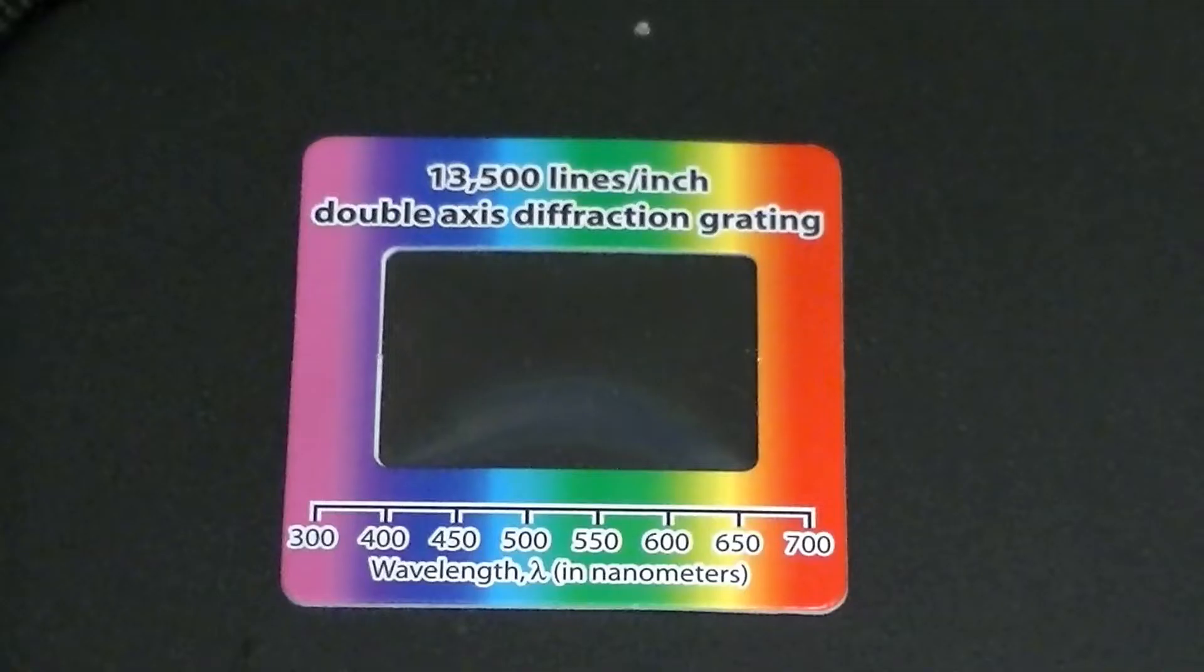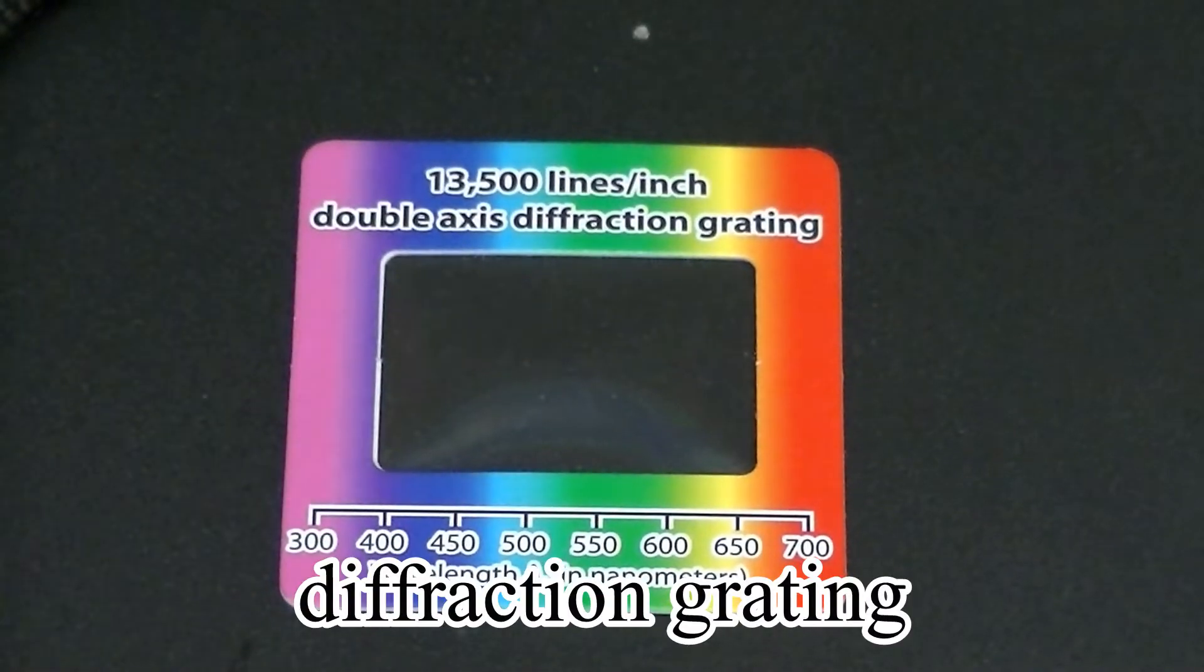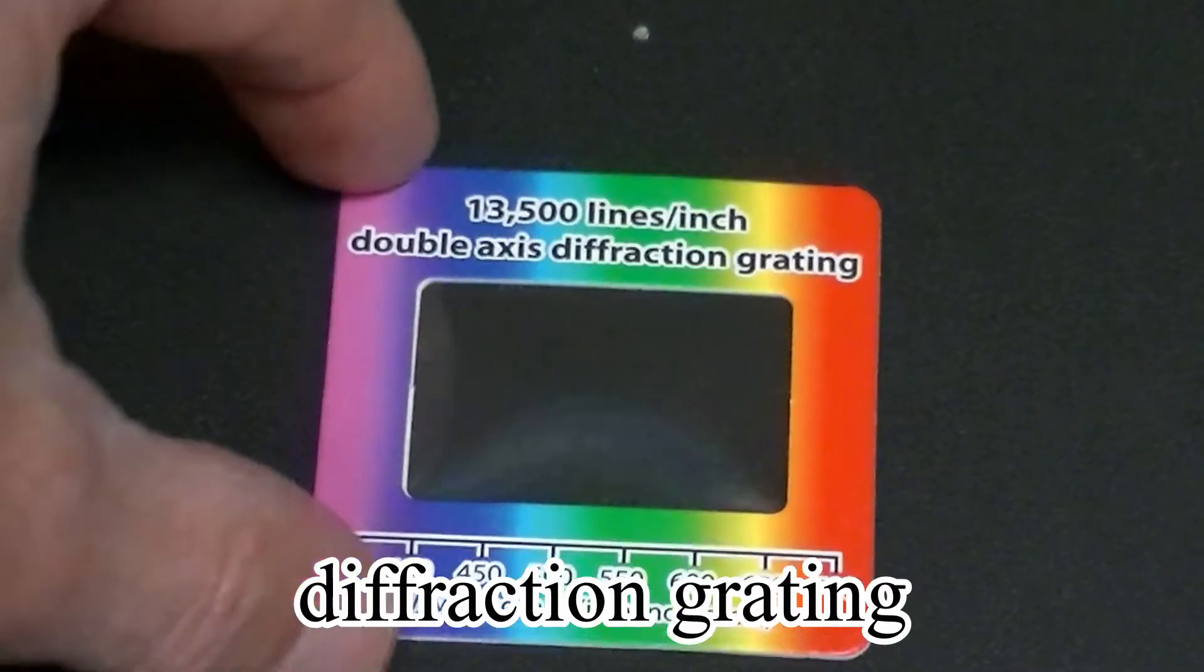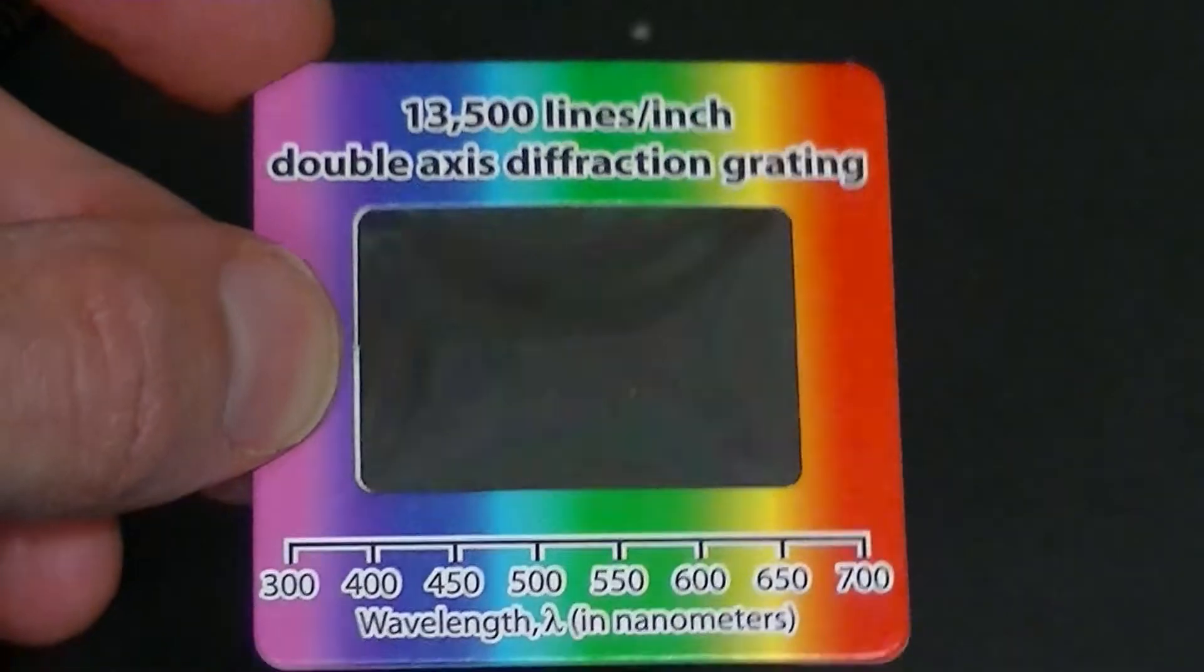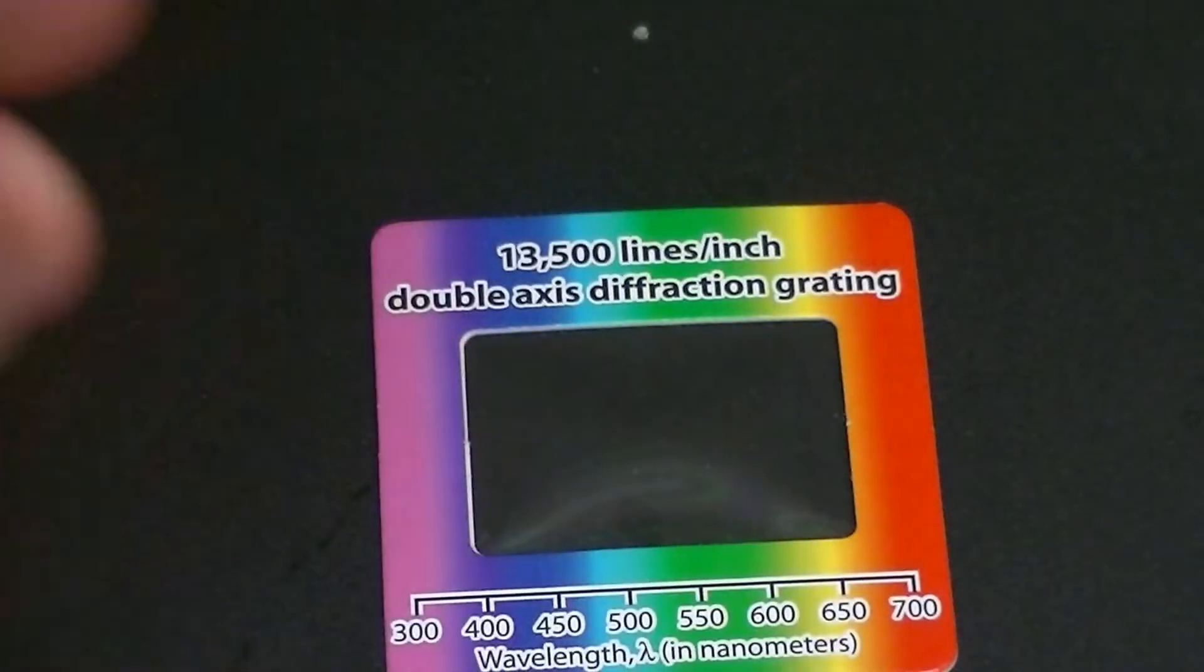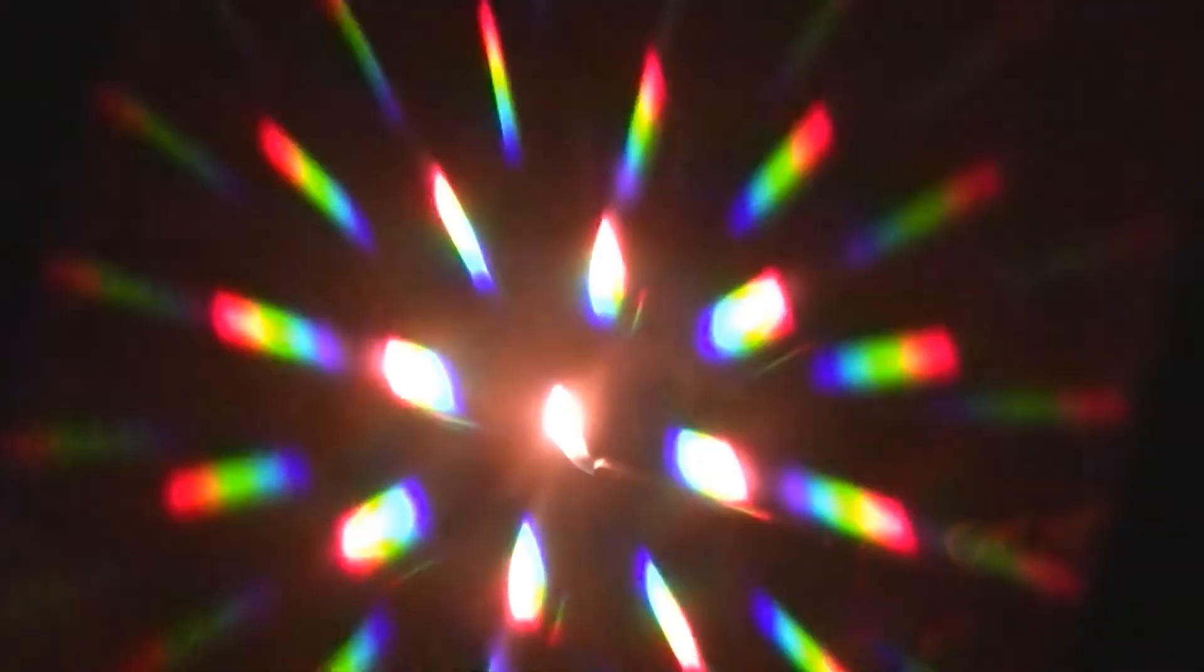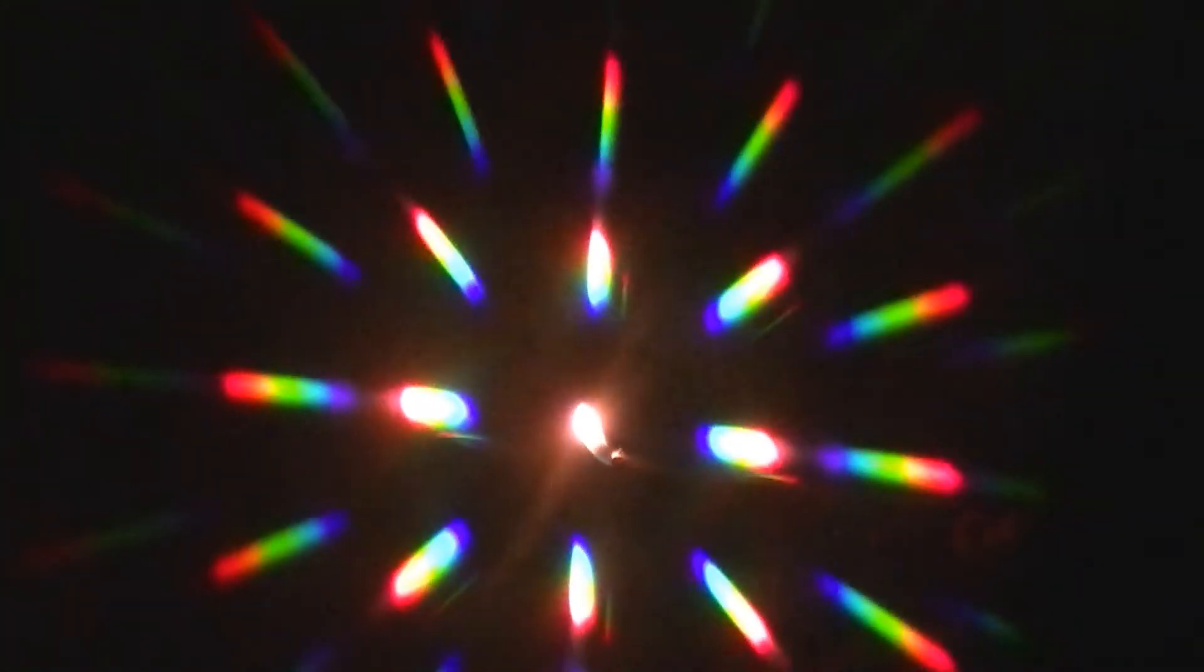We can use something called a diffraction grating to see that this is the case. A diffraction grating can be thought of as a screen with very tiny slits, about as wide as the wavelength of light. When light passes through these slits, it spreads out, and how much it spreads out depends on its wavelength.